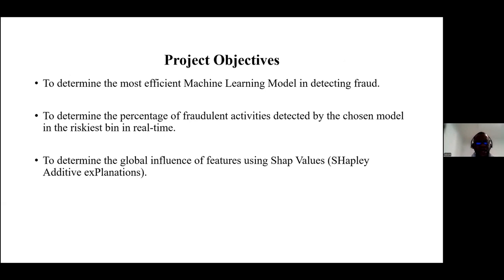In this project, I had three main objectives. The first was to determine the most efficient machine learning method in detecting fraud out of a list of machine learning methods I developed. The second was to determine the percentage of fraudulent activities detected by the chosen model in real time. And lastly, I provided SHAP values for explainability to determine the most influential feature in the prediction of fraud.